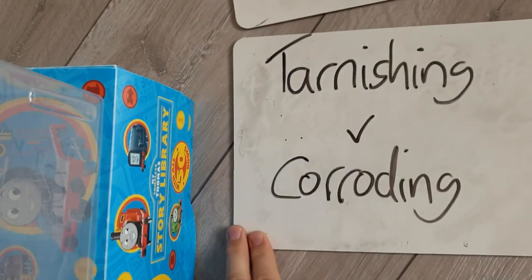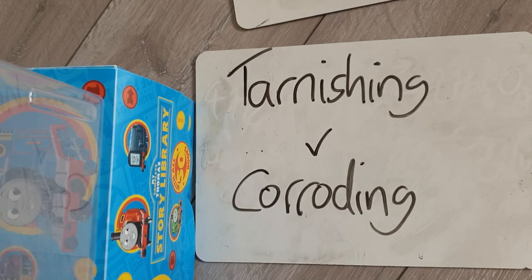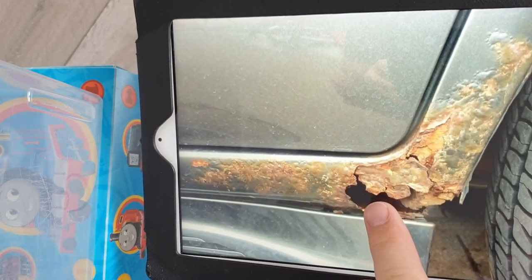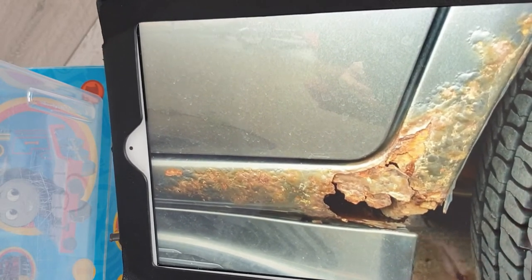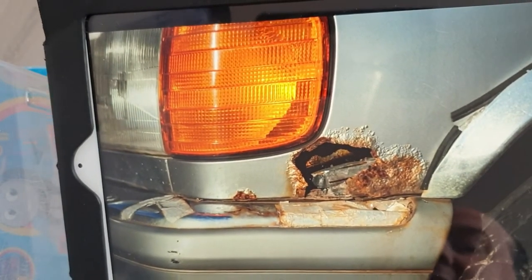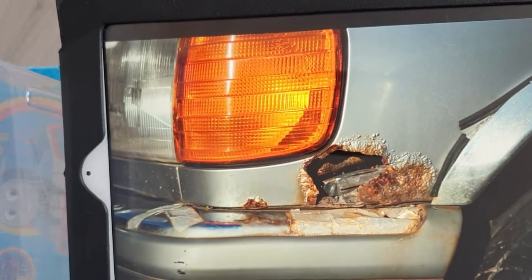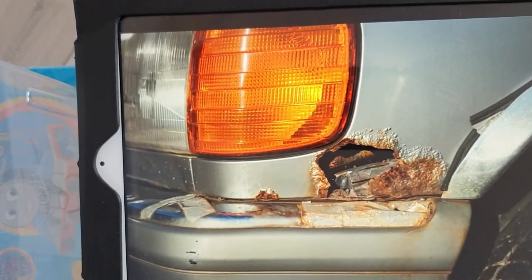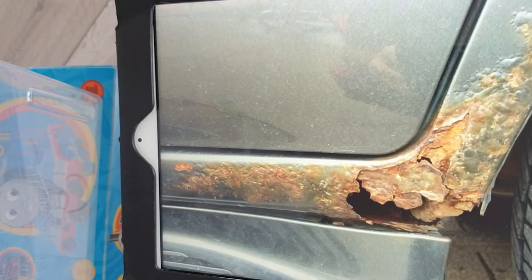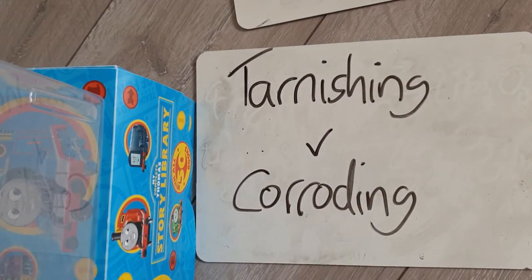Now let's talk about tarnishing versus corroding. If something corrodes, it continues to oxidize over time and the metal becomes weaker and weaker. Here are some examples of a car that has rusted — rusting is the special name for when iron or steel corrodes. Over time the iron in the steel has corroded, becoming weaker, and eventually you get holes in the metal.